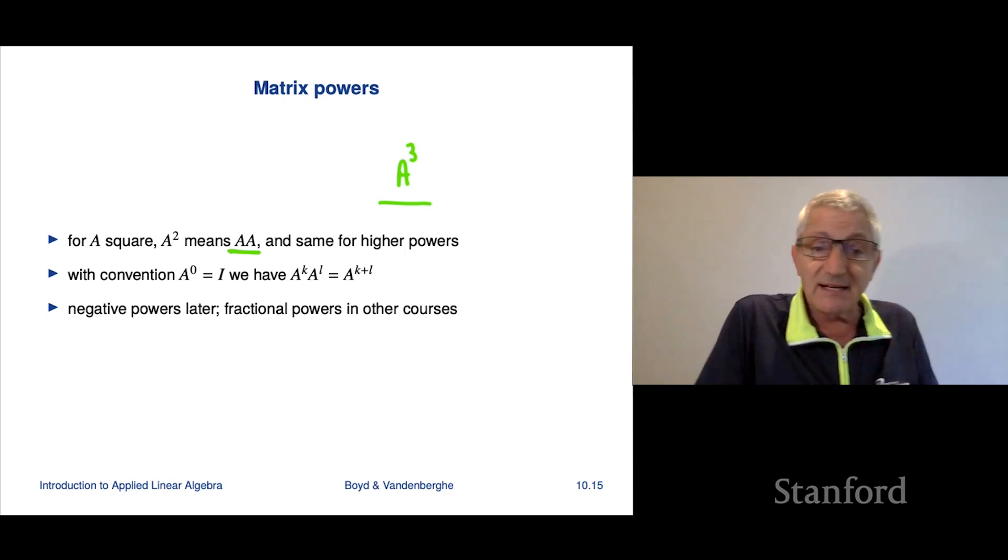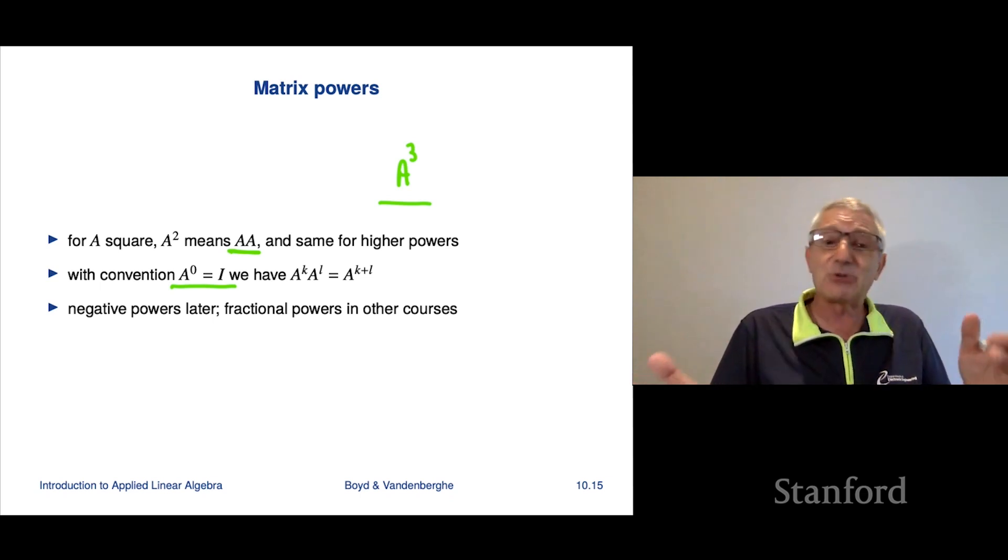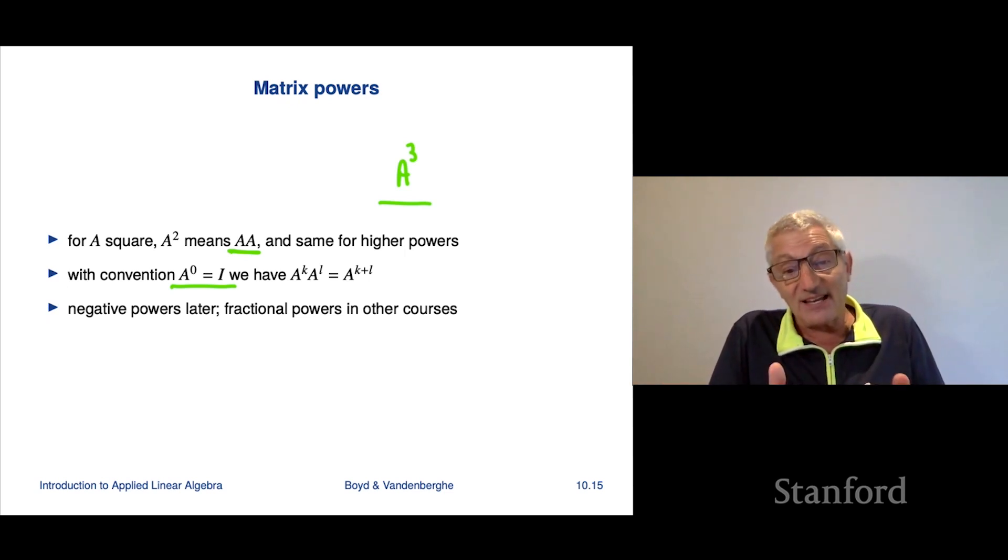Now again, it's going to be useful in terms of the notation to define A to the 0 as the identity. Now notice that that's like for a number raised to the 0 power, you get 1. And I is something like the matrix analog of the number 1. Now, well, in fact, of course, when I is 1 by 1, it is the number 1.